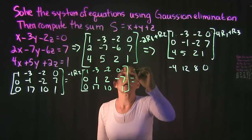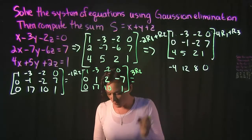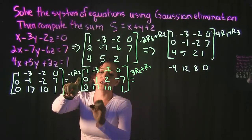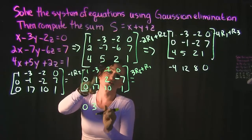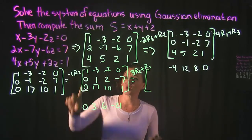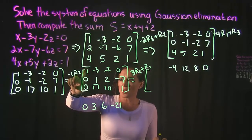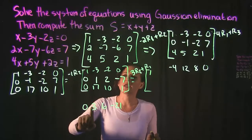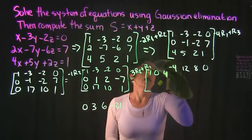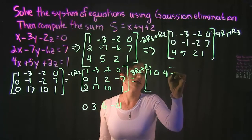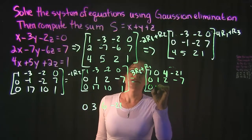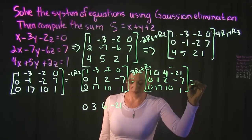We do that so our next step can be: take row 2, multiply it by 3, and add it to row 1. Multiplying row 2 by 3: 0 times 3 is 0, 1 times 3 is 3, 2 times 3 is 6, -7 times 3 is -21. Adding to row 1: 1 plus 0 is 1, -3 plus 3 is 0, -2 plus 6 is 4, and 0 plus -21 is -21. Everything else stays the same: 0, 1, 2, -7 and 0, 17, 10, 1.